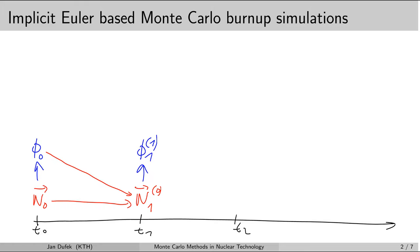We can now use this flux to re-deplete the fuel over the first time step. From the second burn-up simulation we obtain the nuclide field vector N1, which we call the first approximation, because it was computed with the correct end-of-step neutron flux. Comparing these two nuclide fields, they are not the same, because different fluxes were used in each burn-up simulation.